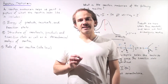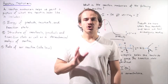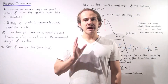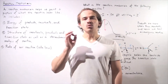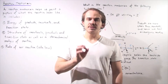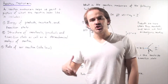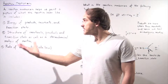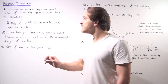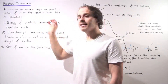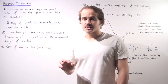Very often in organic chemistry, chemical reactions are described using reaction mechanisms. So what exactly is a reaction mechanism and what does it help us to achieve? A reaction mechanism simply helps us to paint a picture of what our reaction actually looks like. And every chemical mechanism should include the following three important details.